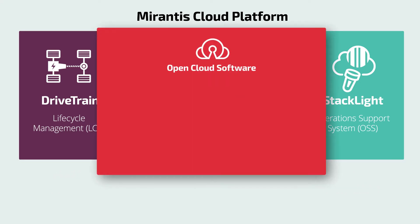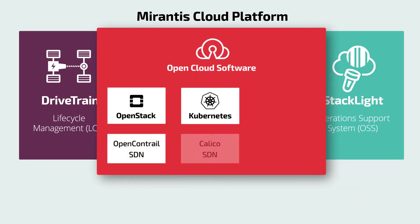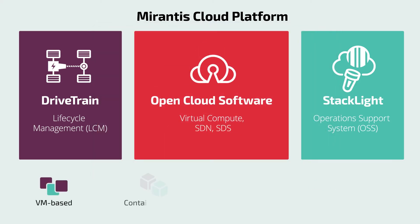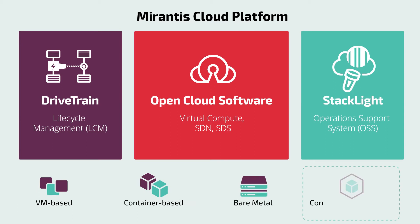MCP's open cloud core includes hardened OpenStack and Kubernetes over OpenContrail and Calico SDNs, with integrated OpenContrail for VM-to-container networking an option, and CEF software-defined storage. MCP can run VM-based, container-based, or bare metal workloads, and optionally provide containers as a service, Kubernetes clusters on-demand, delivered on virtual machines locally or on select public clouds.